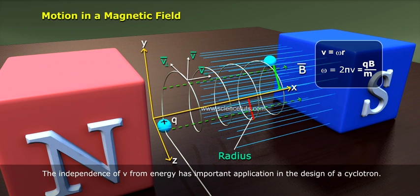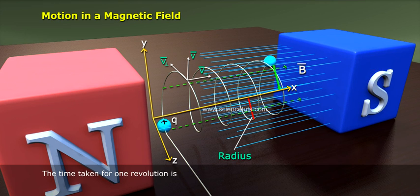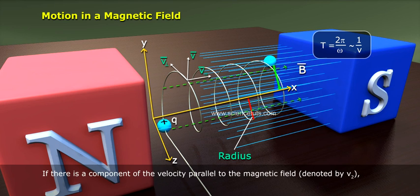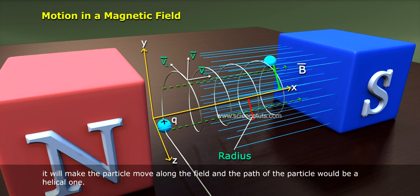The time taken for one revolution is T = 2 pi / omega = 1 / nu. If there is a component of the velocity parallel to the magnetic field denoted by V₂, it will make the particle move along the field and the path of the particle would be a helical one.